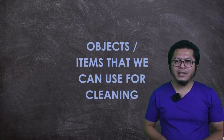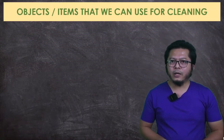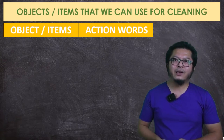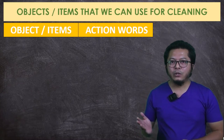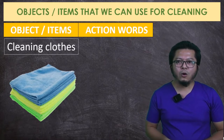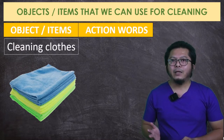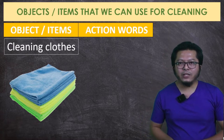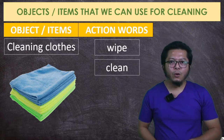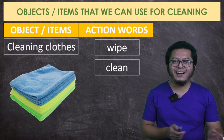Moving on to objects or items that we can use for cleaning. We shall divide into objects or items and then identify the action words that can be used for those objects. The first object is called cleaning cloth. The action word we can use when using this item would be to wipe or to clean. You use this item to wipe things when you are cleaning.